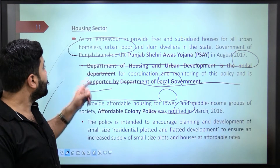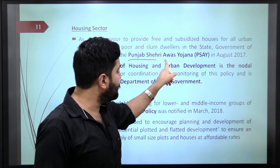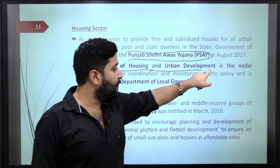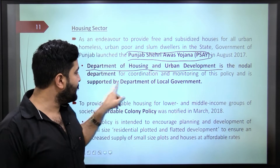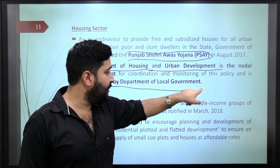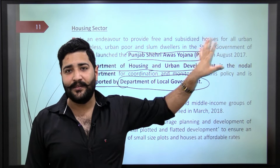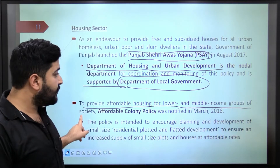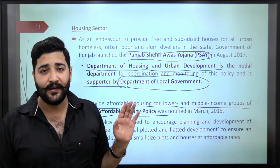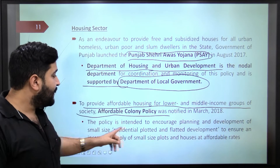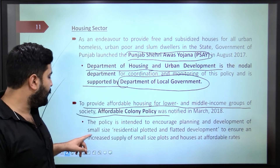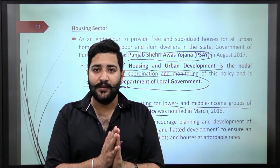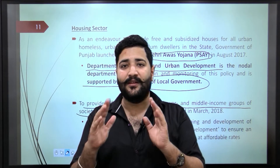One solution to unemployment could be letting females participate more — giving them social liberation. Regarding the housing sector, Punjab Shahri Awaas Yojana was discussed earlier. The nodal agency coordinating it is the Department of Housing and Urban Development, supported by the Department of Local Government. Affordable Colony Policy has been in place since March 2018, intended to encourage planning and development of small-size residential plots so that slums can be eliminated and residents given proper housing with basic services.